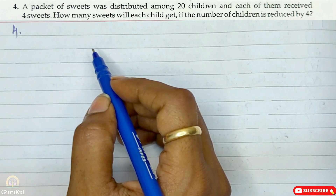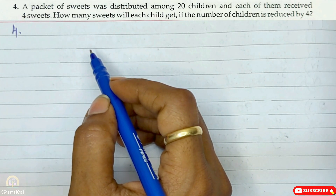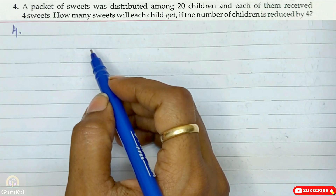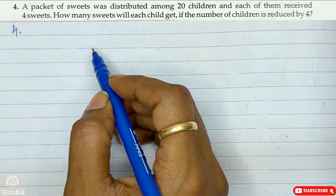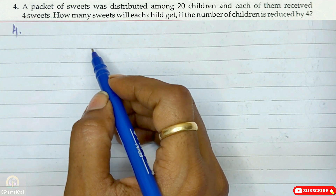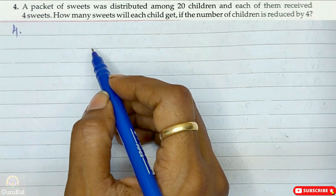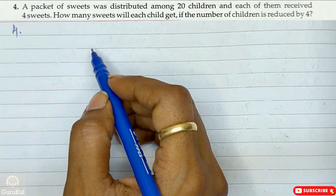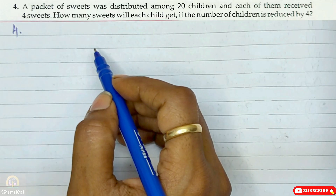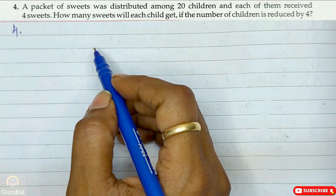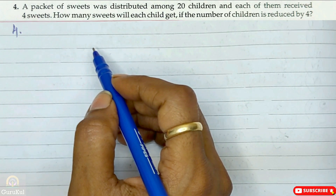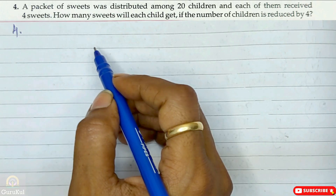Question 4: a packet of sweets was distributed among 20 children and each of them received 4 sweets. Here the constant is the total packet of sweets distributed among children. The number of children is 20 and each gets 4 sweets. The question asks: how many sweets will each child get if the number of children is reduced by 4? If the number of children is reduced, each child gets more sweets — less the children, more the sweets — so this is inverse variation.